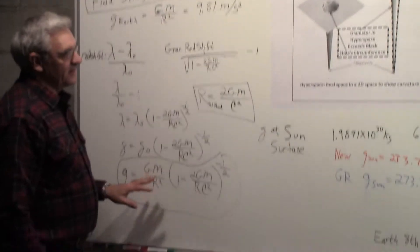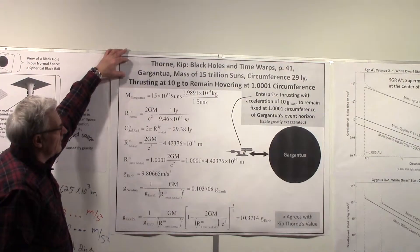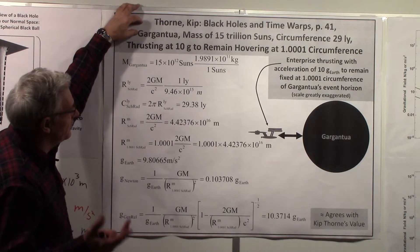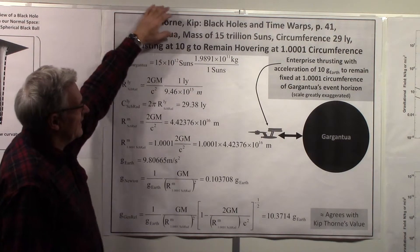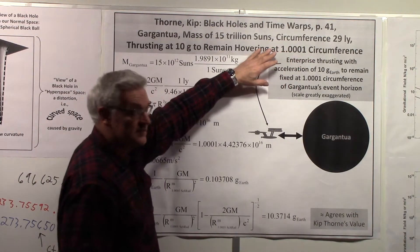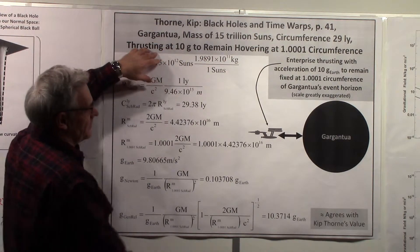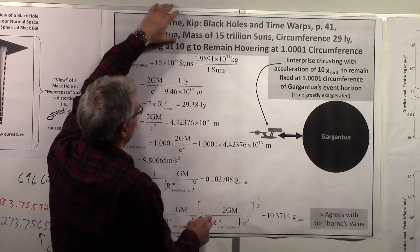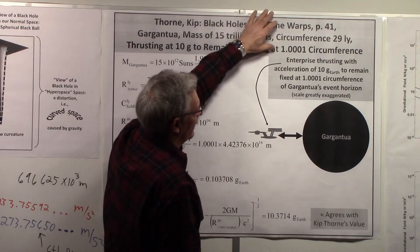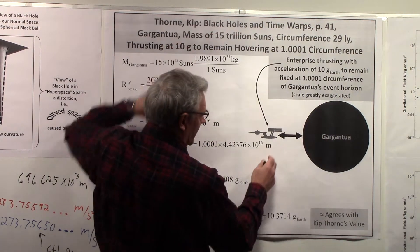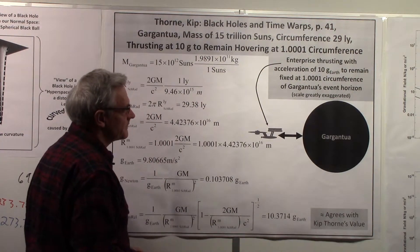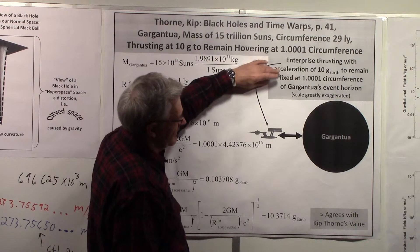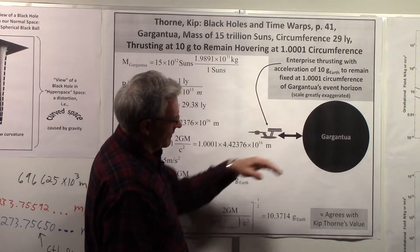So we have this expression and we want to check it. In Professor Kip Thorne's Black Holes and Time Warps, page 41, he talks about a huge black hole called Gargantua. It has a mass of 15 trillion suns and a circumference of 21 light years. He says that if you are thrusting away at 10 G's, you could remain hovering at 1.001 times the circumference of Gargantua — essentially 1.001 times its Schwarzschild radius. So we're showing the Enterprise thrusting with 10 Earth G's to remain fixed at that distance from Gargantua's event horizon.